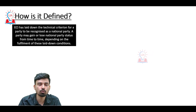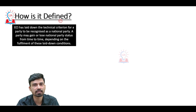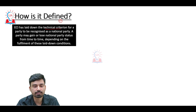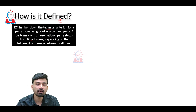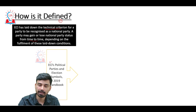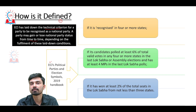So the question comes: how can we define any party as a National Party? The Election Commission of India has laid down the technical criteria for a party to be recognized as such — a party may gain or lose National Party status from time to time depending on the fulfillment of these conditions. These conditions are laid down in the Election Commission of India's Political Parties and Election Symbols 2019 handbook, which lists three or four major criteria that a party must fulfill.